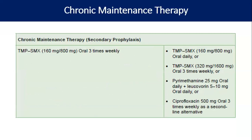Chronic maintenance therapy is cotrimoxazole double strength orally three times weekly; for patients with CD4 count less than 350, we give double strength cotrimoxazole once a day. Alternatives are pyrimethamine 25 mg orally or ciprofloxacin 500 mg orally three times weekly. For all practical purposes, it is cotrimoxazole that we give, continuing at least until the CD4 goes above 350 per cubic millimeter.